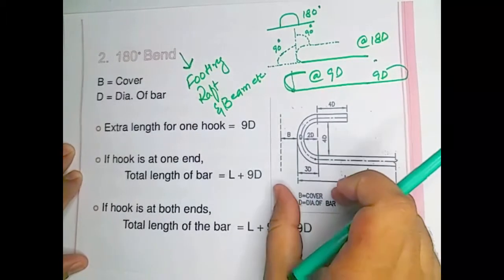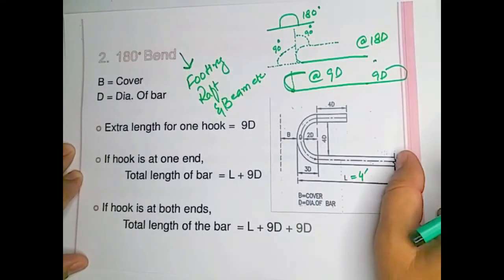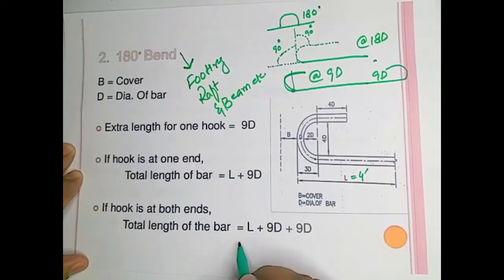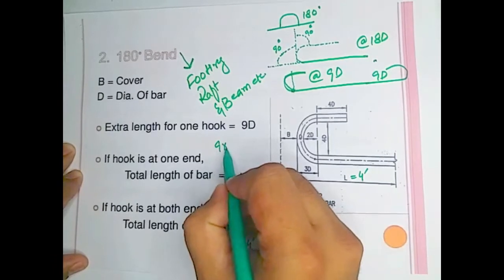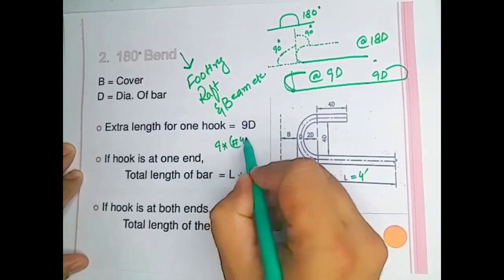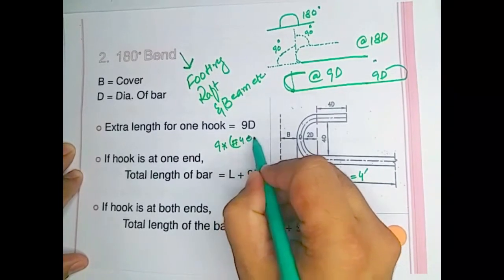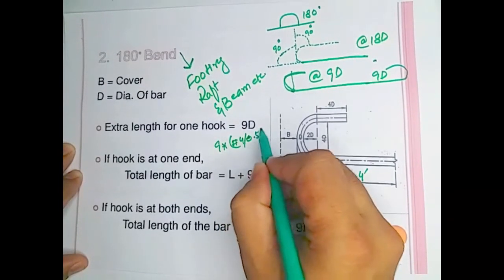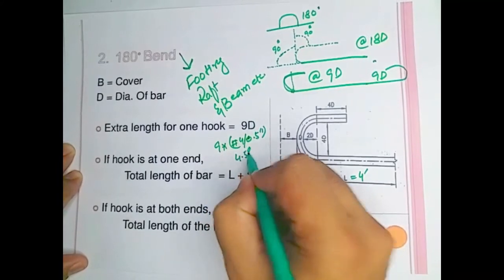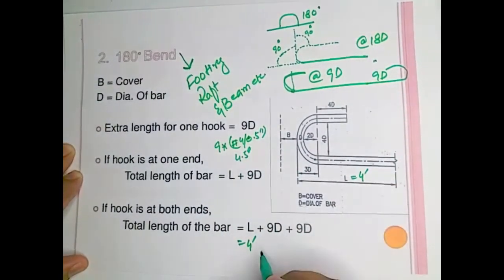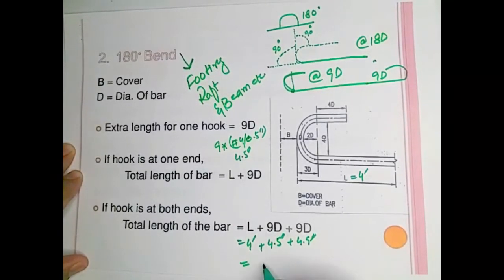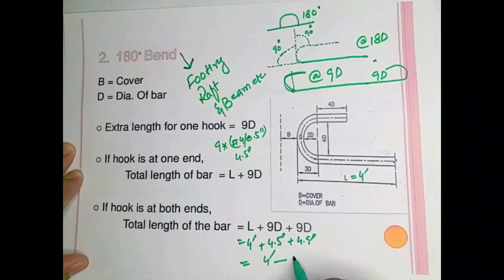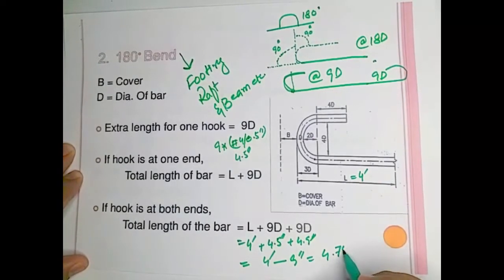For a #4 bar (diameter = 0.5 inches), 9 × 0.5 = 4.5 inches on one side and 4.5 inches on the other side. So the total bar length is 4 feet plus 4.5 inches plus 4.5 inches, which equals 4 feet and 9 inches, or approximately 4.75 feet.